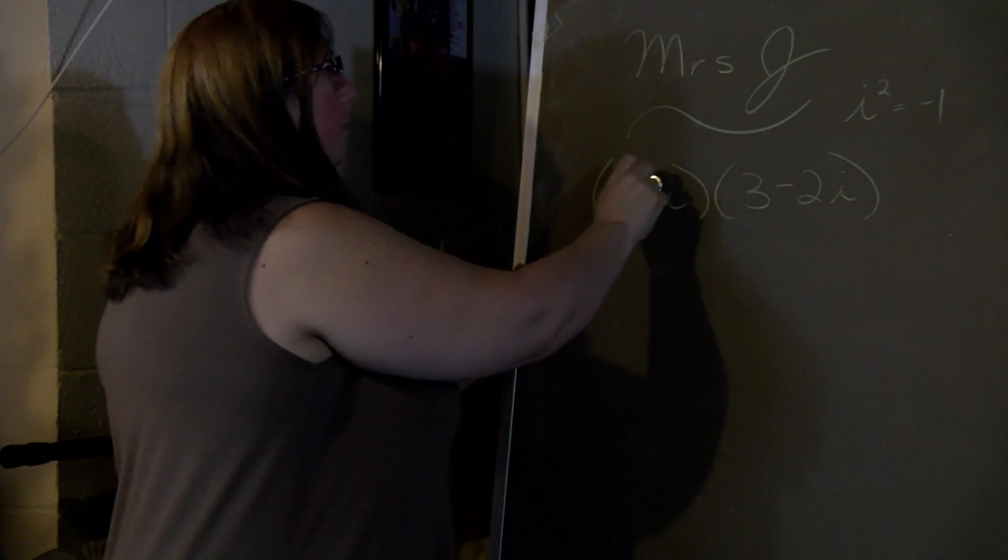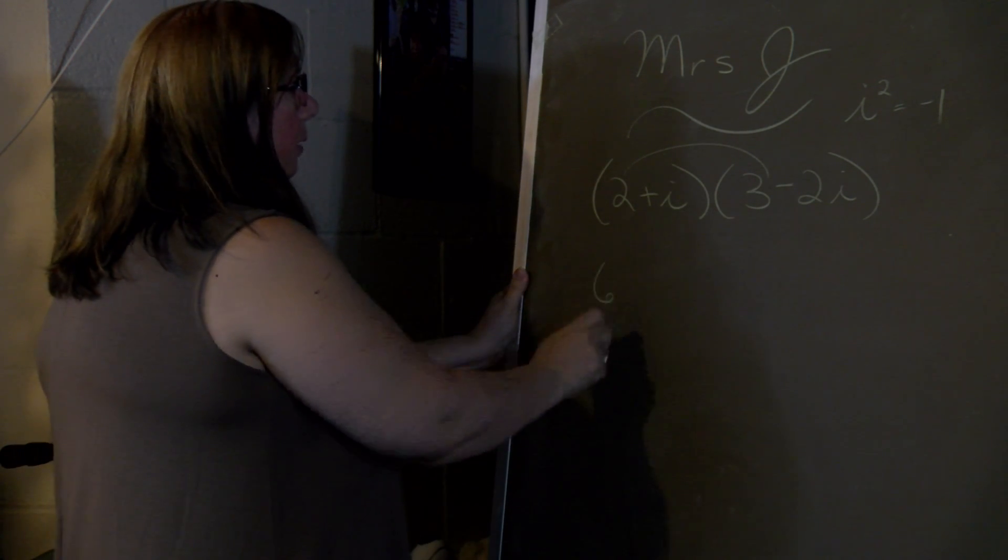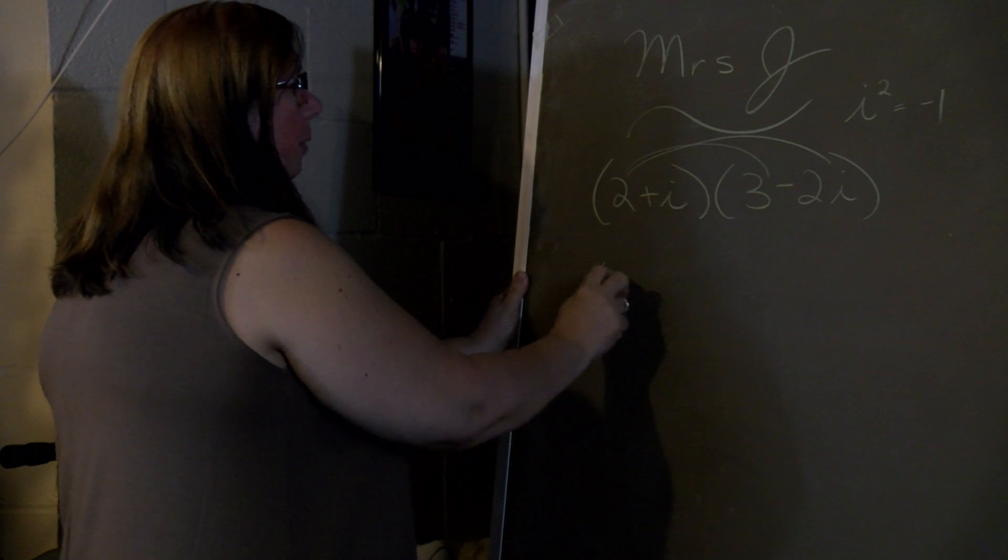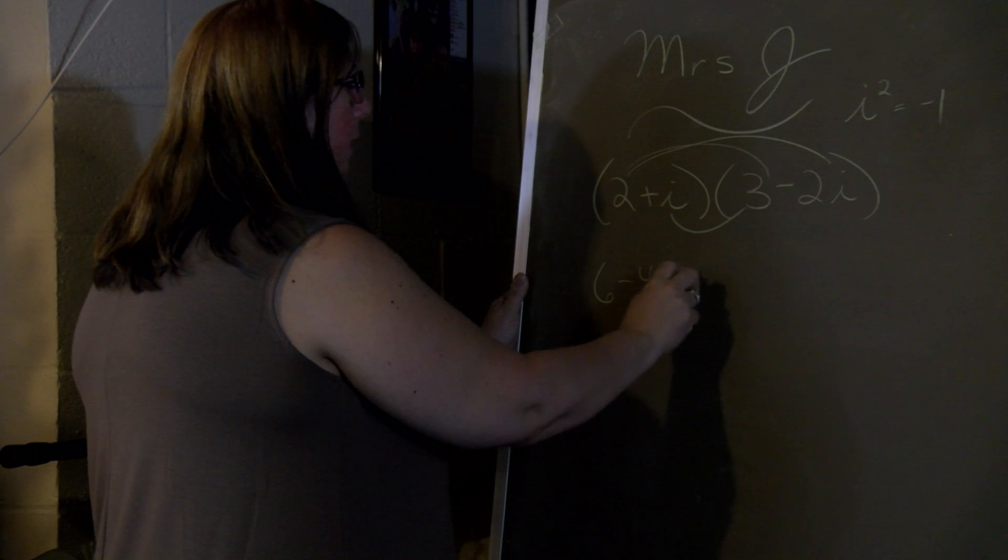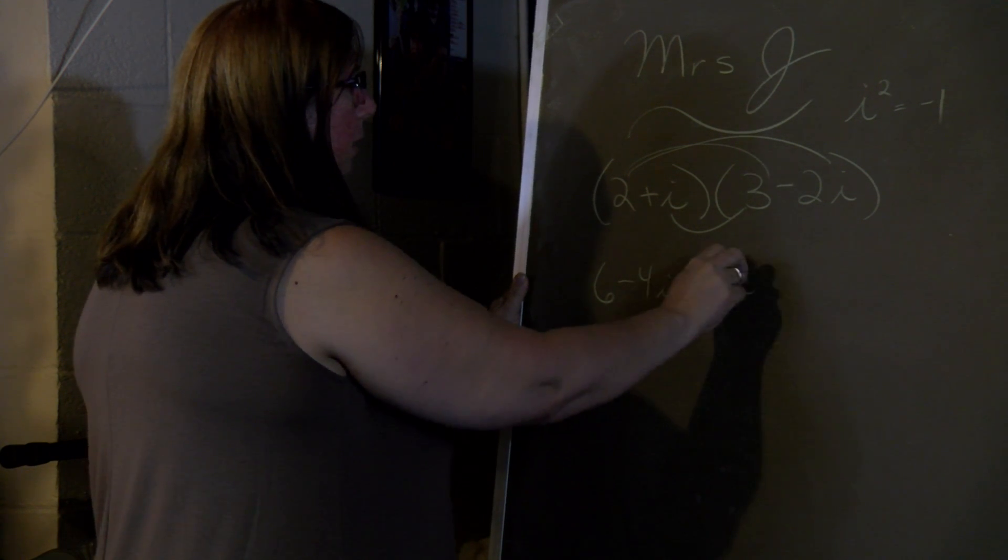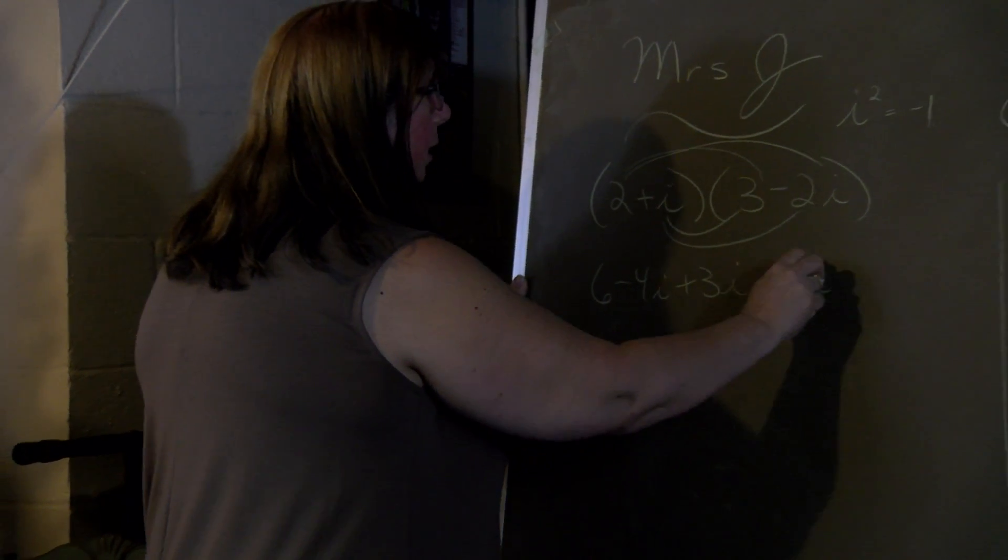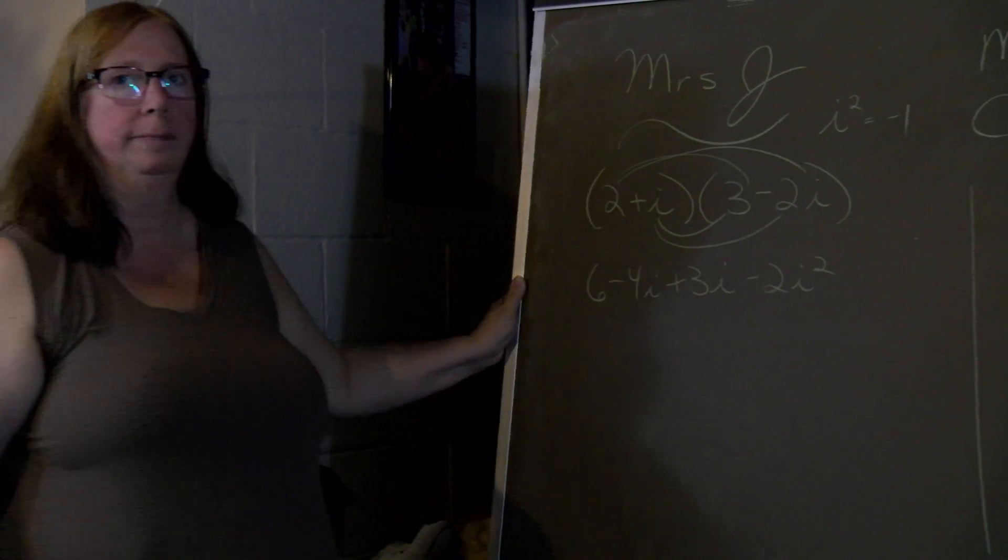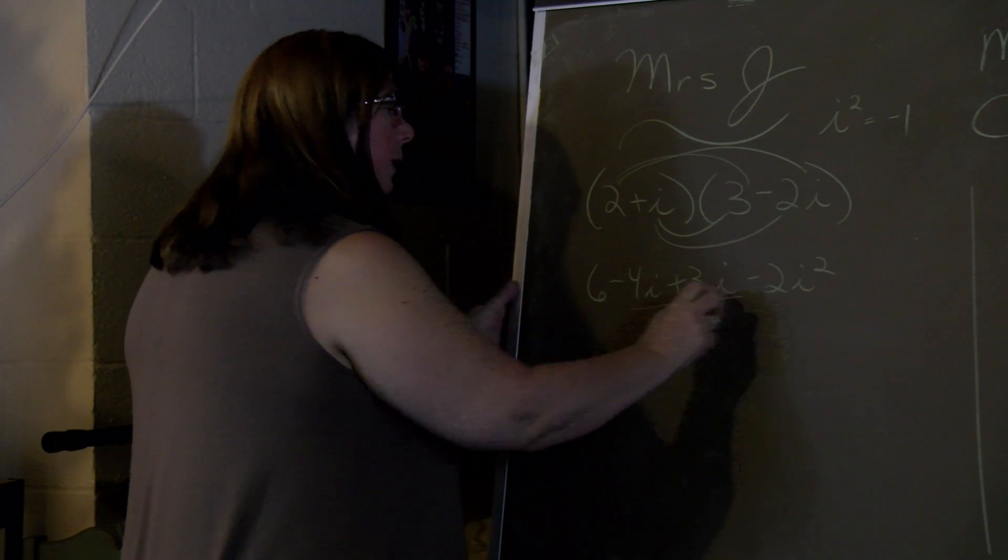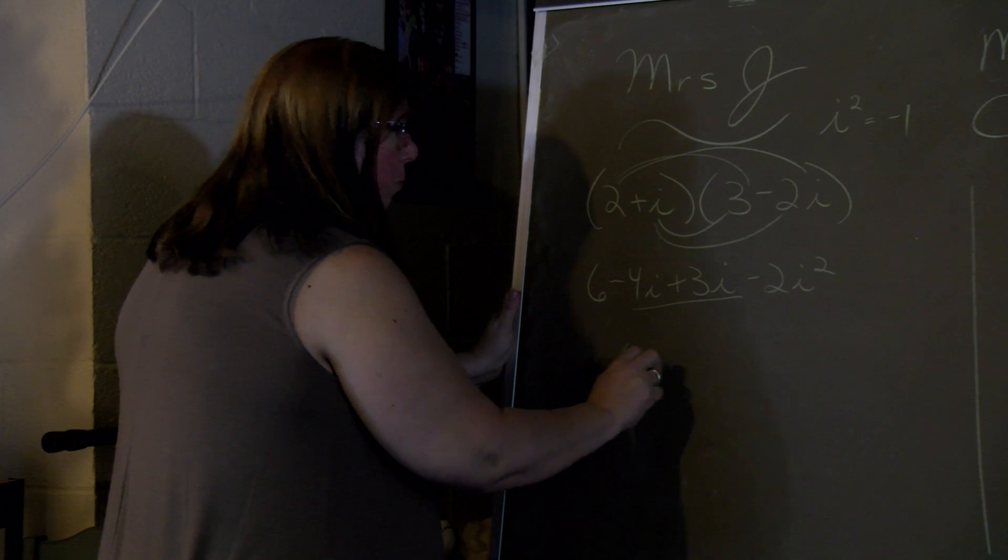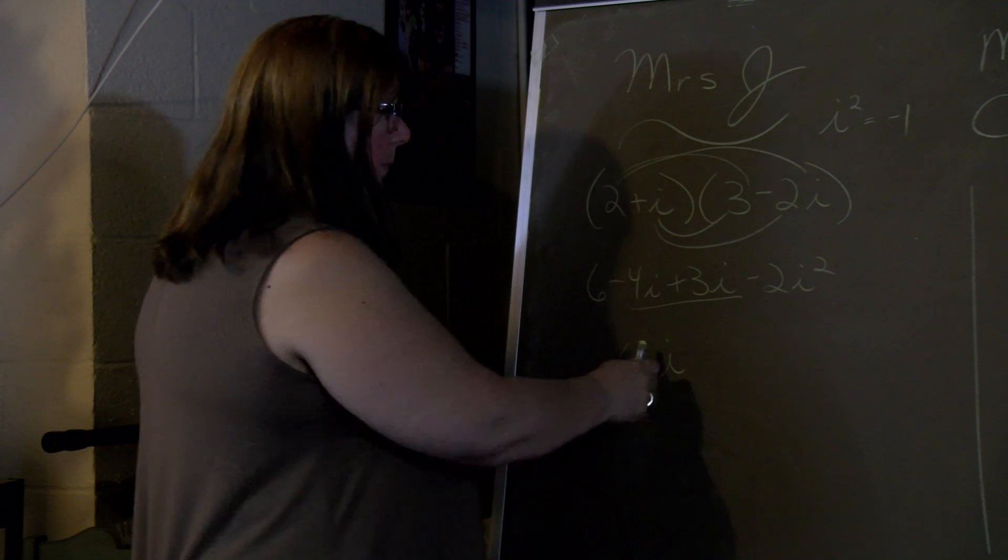So when we multiply these, we have 2 times 3, because we're going to FOIL it, is 6. Multiplying the outside, we have a negative 4i. Multiplying the inside, we have 3i. And the last 2, we have a negative 2i squared. Now we need to combine like terms. We can combine these two and we get a minus i or minus 1i. Having the 1 is not wrong, if you put the 1 here.